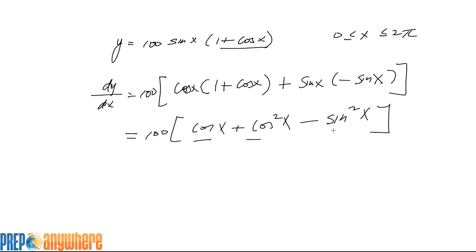So we have 2 cosines versus 1 sine. Let's use the Pythagorean identity to convert that into cosine, which is 1 minus cosine squared x.